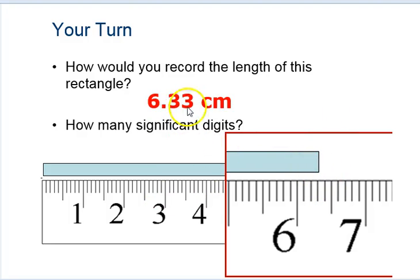And so this person estimated that 6.33. It looks like you're not quite halfway. Again, if we said 6.35, you would think you're exactly halfway between 6.3 and 6.4.